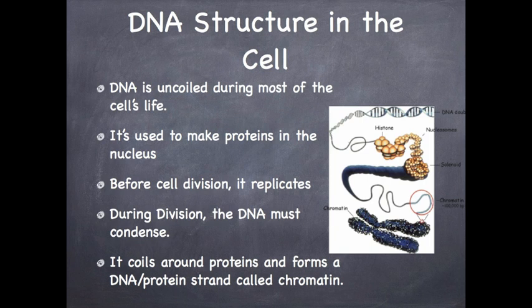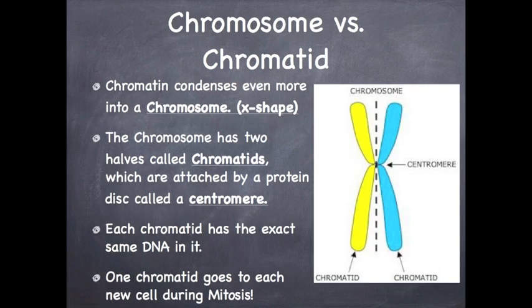Now that we've talked about DNA structure in the cell, we need to talk about how things work on a bigger level. DNA is uncoiled and in strand form for most of the life of the cell — during that time it's used to make proteins in the nucleus. Right before cell division, the DNA has to replicate, still uncoiled. But during the actual dividing process in mitosis or meiosis, the DNA has to condense. It coils around proteins to form a long DNA-protein strand called chromatin.